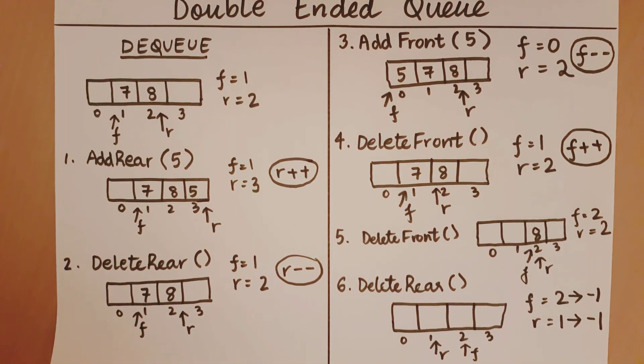Now that we know how the four operations of a double-ended queue work, let's look at how we are going to program these.